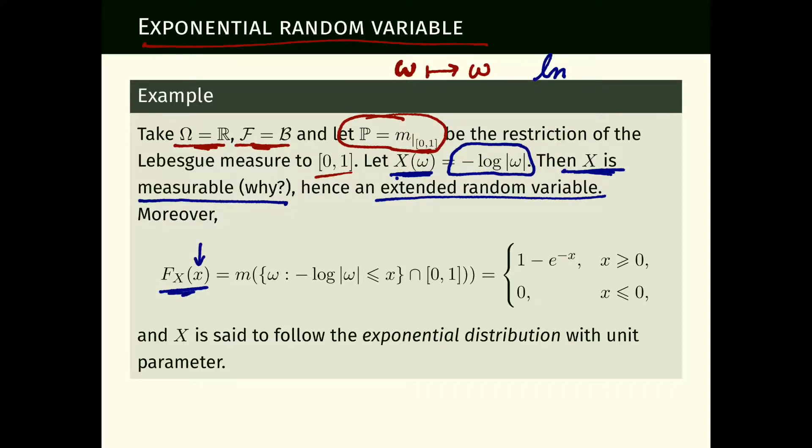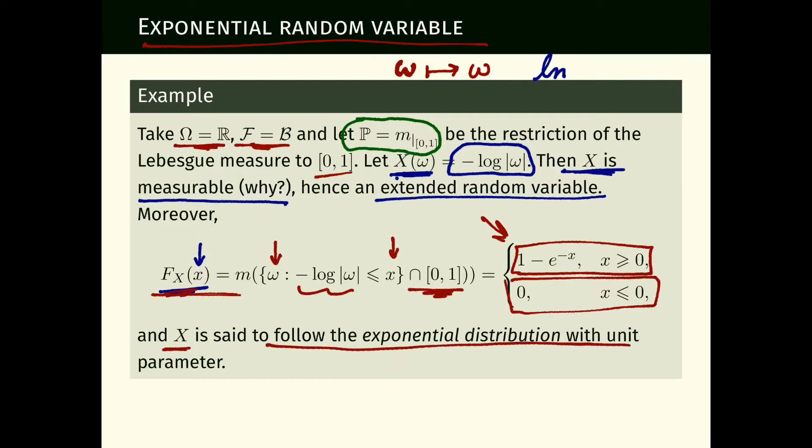If we write what is its cumulative distribution function, the probability that it's less than lowercase x is exactly the measure of the set of all little omegas whose negative logarithm is at most x. We take the intersection with the interval (0,1) because our probability measure was defined as the restriction of Lebesgue measure to (0,1). Finally, the Lebesgue measure of this set equals 1 minus e^{-x} if x is non-negative and 0 if x is non-positive. Whenever a random variable has this CDF, we say x follows the exponential distribution with unit parameter.